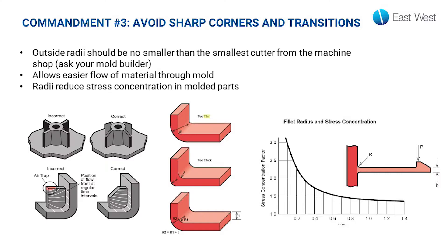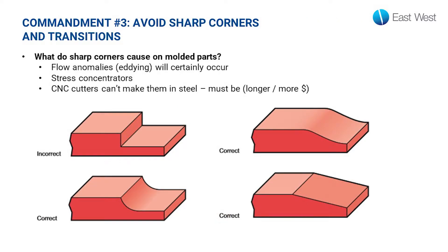The third commandment for injection molding is to avoid sharp corners and transitions. The material is going to flow around corners when it fills the mold, and you don't want it transitioning from fat to thin to fat sections again — that causes a lot of material flow issues. We want a nice constant wall through the part so that it flows around corners very easily. Also from a stress standpoint, there's a very strong correlation between sharp corners and mechanical failures in products.